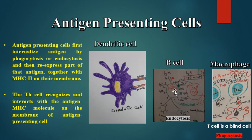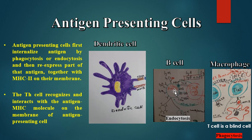Following internalization, the phagosome binds to a lysosome — an enzymatic body — and they coalesce to form a phagolysosome. The antigen, which is a tertiary protein, is then enzymatically processed and cut into primary peptides. This process is known as antigen processing.